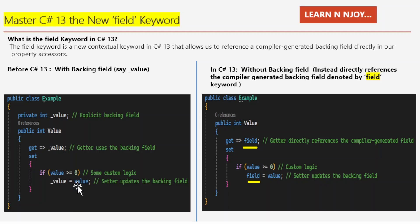Overall, this Example class encapsulates an integer value through the property, which provides controlled access. The setter enforces that only non-negative values can be assigned. This pattern is useful for data validation and encapsulation in object-oriented programming. If you've noticed, the underscore value field is required to store the property's data. It's not a lot of code, but wouldn't it be nice if the compiler could handle that for you?